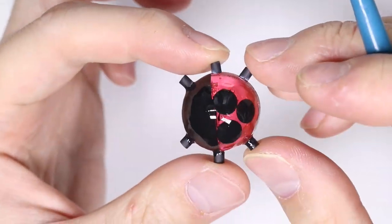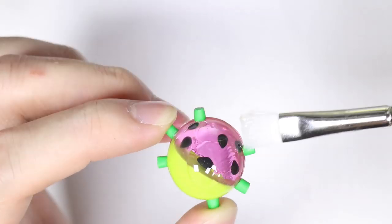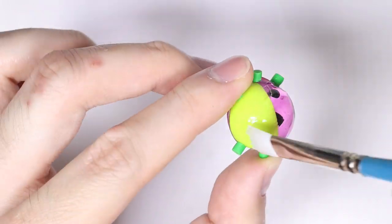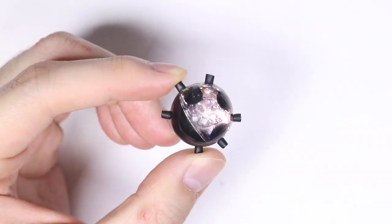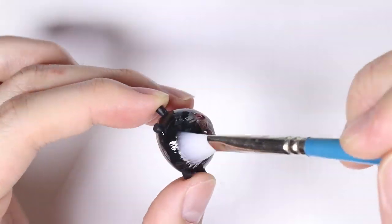And for the final step, I'm taking some UV resin and glazing all over to give it an extra shine. And once fully glazed and cured you should have a final product that looks like these.